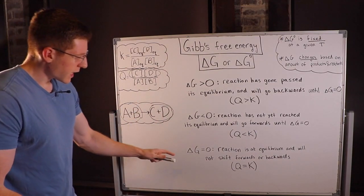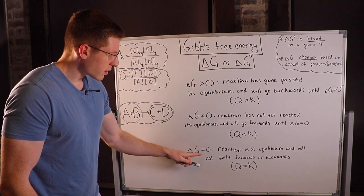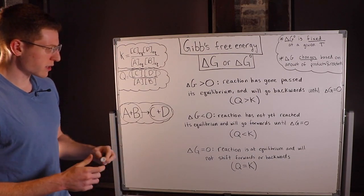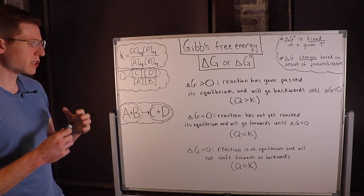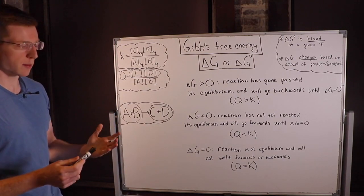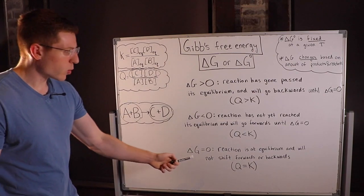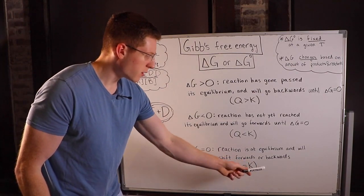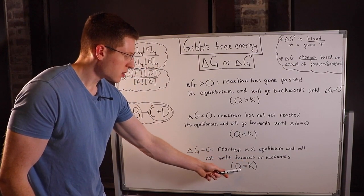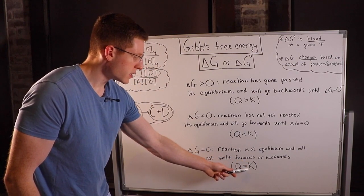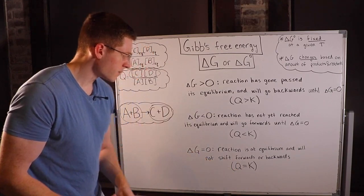The third case is when delta G equals zero. This is when the reaction is at equilibrium and will not shift forwards or backwards — in other words, Q equals K.